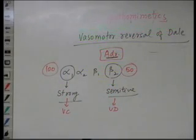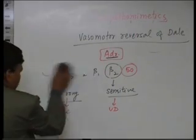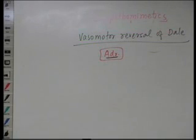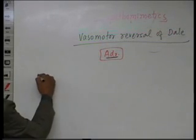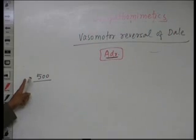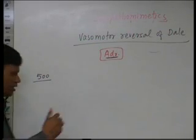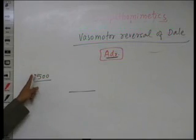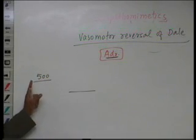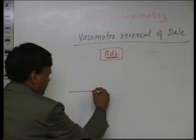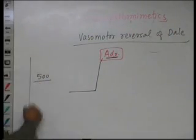If we discuss the effect of adrenaline on blood pressure based on this, suppose we give 500 molecules of adrenaline. At 500, both alpha1 and beta2 are stimulated, and the effect is due to alpha1. This is above the normal blood pressure level, so blood pressure increases — say from 120 to 180.